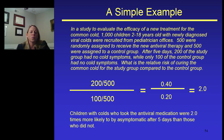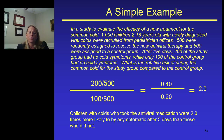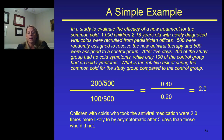The question is: what is the relative risk of curing the common cold for the study group compared to the control group? This is simply the ratio of the risks — or in this case, the ratio of cure rates. In the numerator, we have 200 over 500, or two-fifths; in the denominator, 100 over 500, or one-fifth. That generates a relative measure of 2, interpreted as: children with colds who took this antiviral medication were two times more likely to be asymptomatic after five days compared to those who did not.